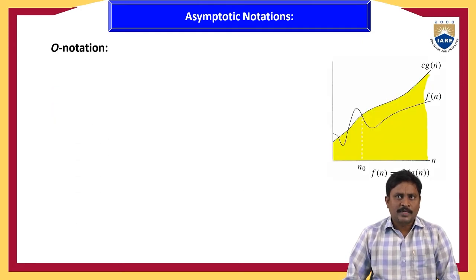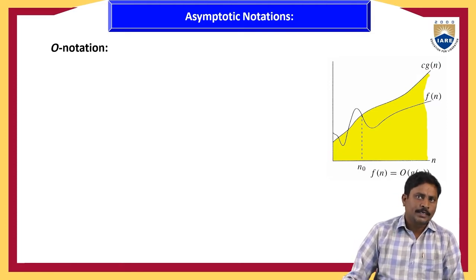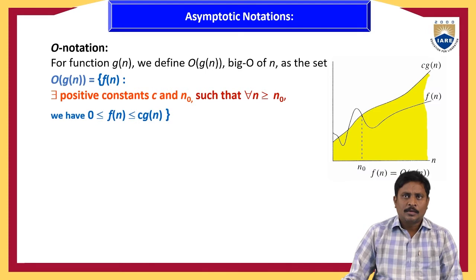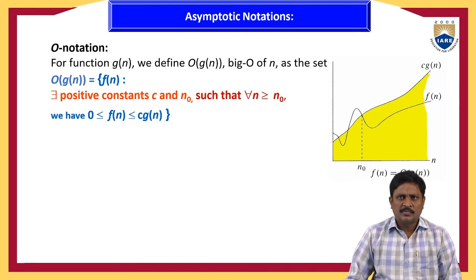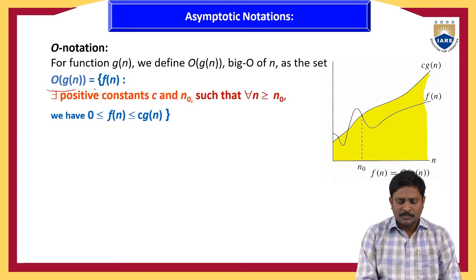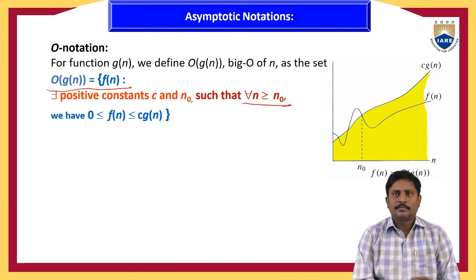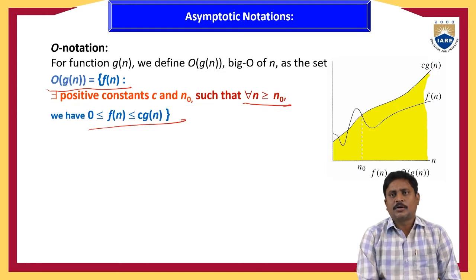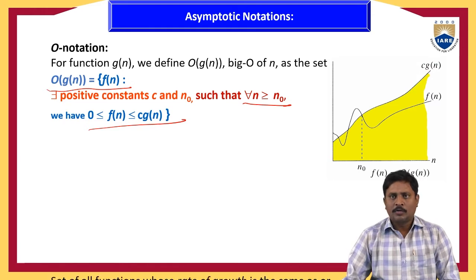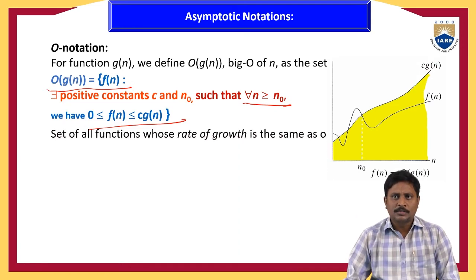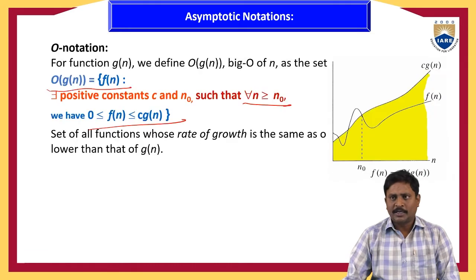Now we discuss big O notation. For a function g(n), we define big O of g(n) as the set of functions f(n) such that there exists a positive constant c and n₀ such that for all n greater than or equal to n₀, f(n) ≤ c·g(n). This represents the set of all functions whose rate of growth is the same as or lower than that of g(n).